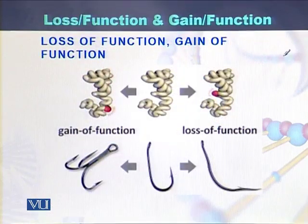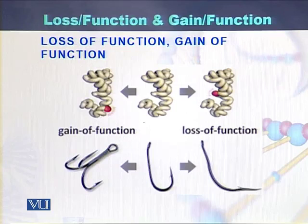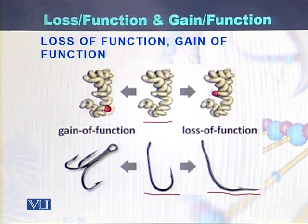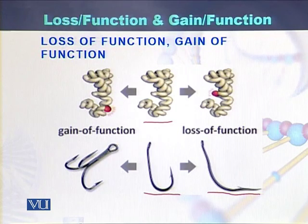In this diagram, we can try to understand the difference between loss of function and gain of function mutations. If we take that this is the normal protein and it works to catch the fishes from the rivers, and if there is a loss of function on that protein, then it is converted into such a structure that we cannot catch the fish. This kind of change in the structure of the protein is called loss of function.